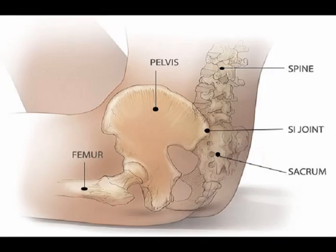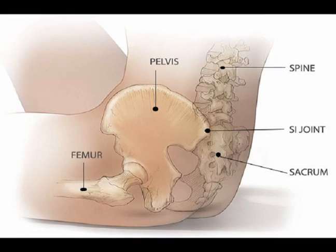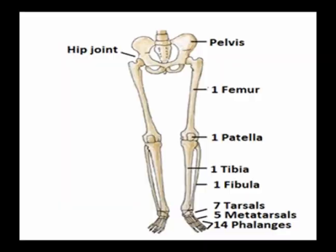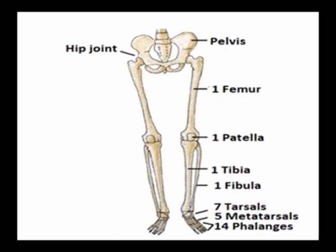The appendicular skeleton is structured for a greater range of motion and local motion generation as compared to the axial skeleton. The appendicular skeleton articulates directly with the axial skeleton at the sacroiliac joints, which is where the sacrum articulates with the ilium bilaterally. This connection between the sacrum and the ilium is important to transfer the load of the axial skeleton to the lower limb of the appendicular skeleton.